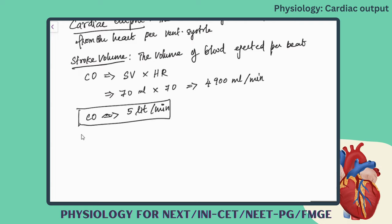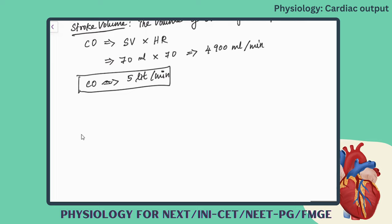That is the volume of blood which is ejected from the heart. This also gives the cardiac index, which is cardiac output divided by the body surface area. The normal value you get is 3.2 liters per minute.